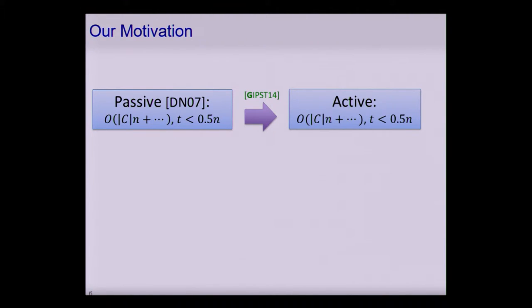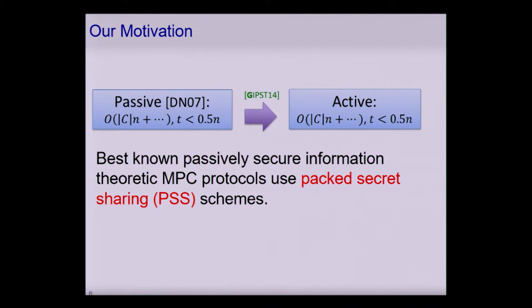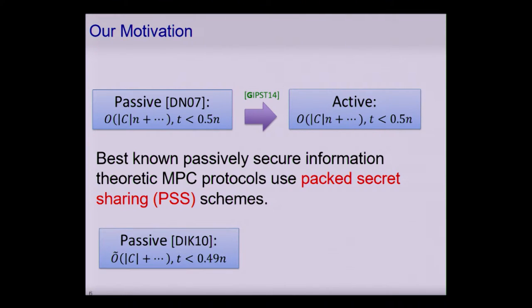However, the best passively secure protocols use what's called packed secret sharing. By using packed secret sharing, we can sacrifice 1% of the security threshold — so instead of 0.5 we have a bit less — but in return we get a protocol where the leading term in communication complexity only depends on the size of the circuit being evaluated and not on the number of parties participating.